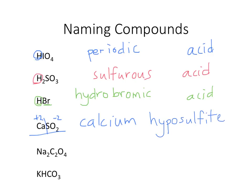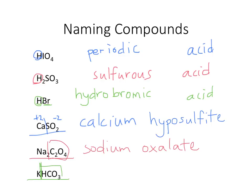For Na2C2O4: Na is sodium, and C2O4 from the back of your common ion sheet is oxalate — so sodium oxalate. For KHCO3: K is potassium, and HCO3 from the back of your common ion sheet is hydrogen carbonate or bicarbonate. So you could call this potassium hydrogen carbonate or potassium bicarbonate — either way it's exactly the same thing, so whichever you prefer.